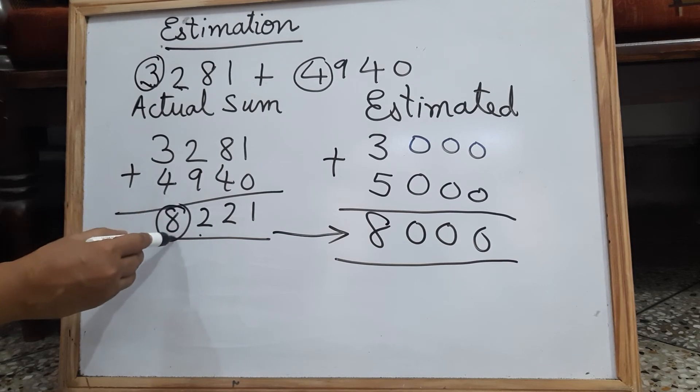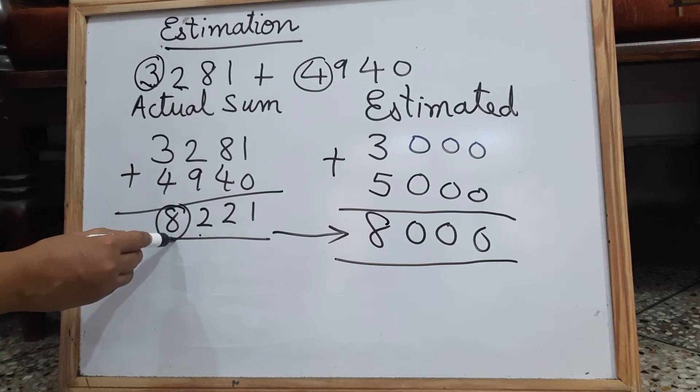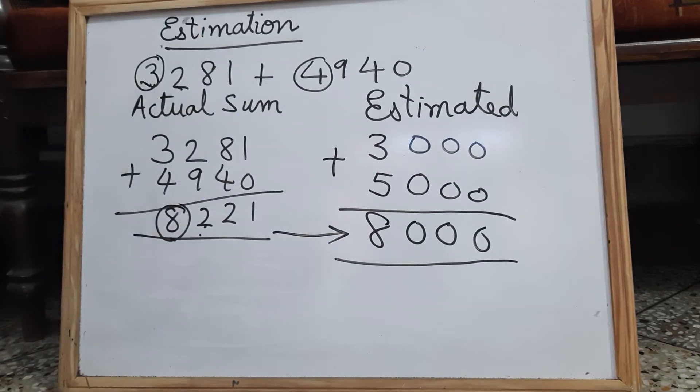See, when you estimate it to the nearest 1,000, the next place is less than 5, so the number will be 8,000 only.